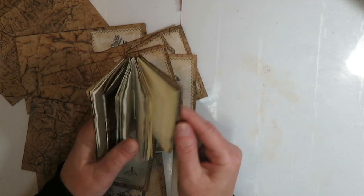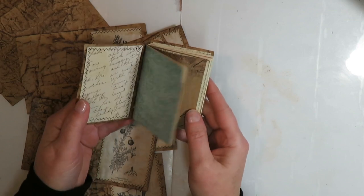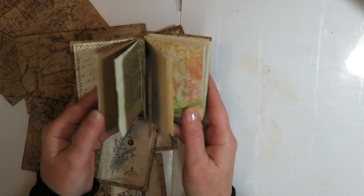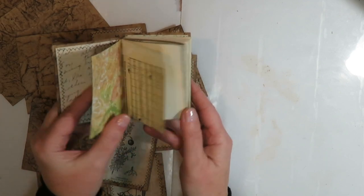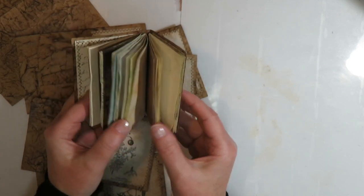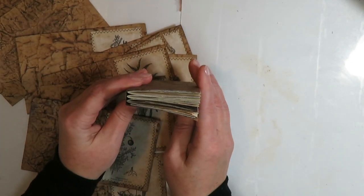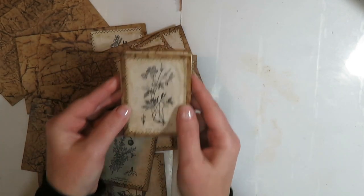This is a nice stash buster, scrap buster project. I've gone into my scrap box and gathered up tea-dyed papers, book pages, music paper, and cardstock, and created little three-signature mini journals.